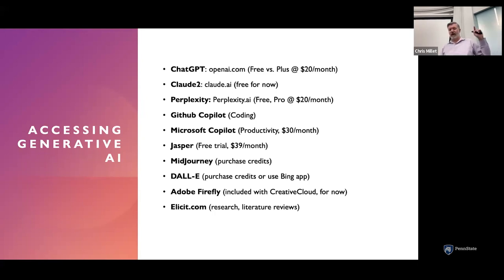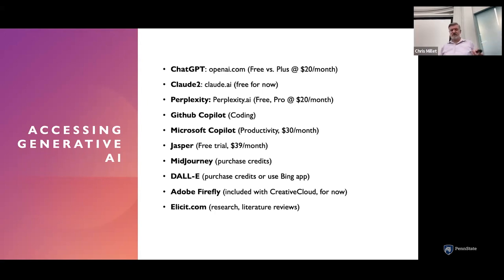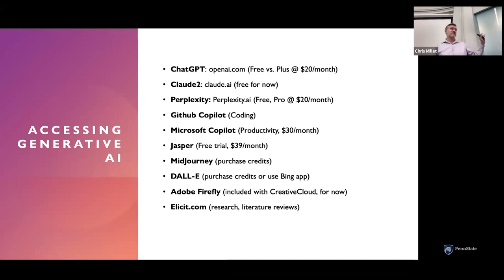GitHub Copilot is for coding. Microsoft Copilot — somewhat confusingly named — is baked right into Office 365 and will scan a folder of documents and create memos and presentations for you based on your data. Some of the demos are pretty cool. For image generation, there are tools like Midjourney and DALL-E. My team within World Campus Learning Design is using Adobe Firefly to develop course graphics — a really cool time saver and productivity enhancer for people working in creative fields.